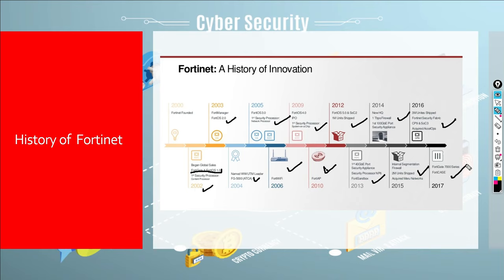For example, Fortinet might advertise URL blocking, but on lower-end devices turning on that feature might not work — it could be a bug or a hardware limitation. On medium or higher-end devices, however, it was working fine. They have likely improved many things over time, and we'll see that in our labs.